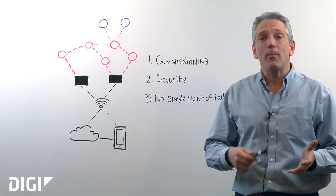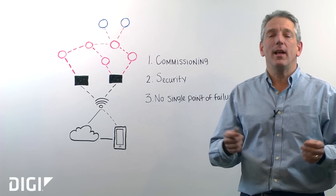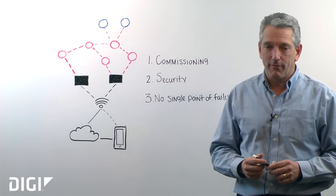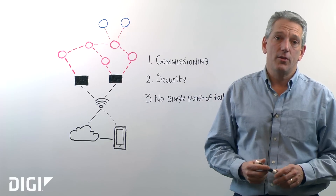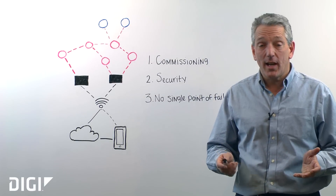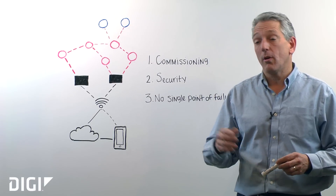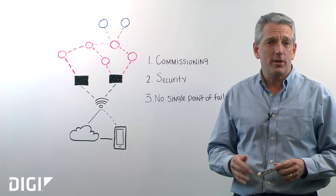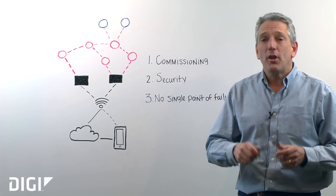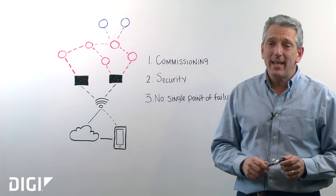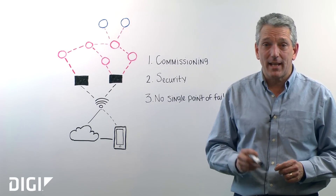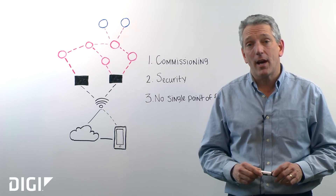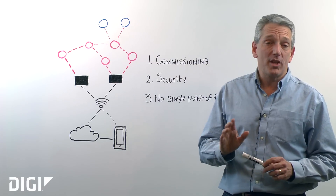First, Thread is a protocol just like a lot of other mesh networking protocols used in the Internet of Things. It can be used to connect sensors or other actuator devices — whatever you need to use it for. But Thread has some key differences and key benefits that differentiate it from other 802.15.4 based protocols.